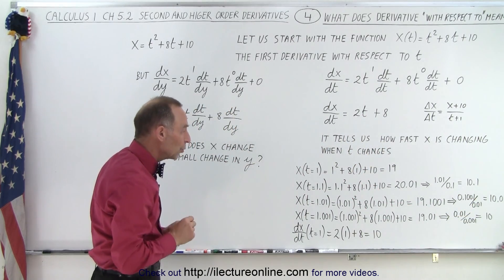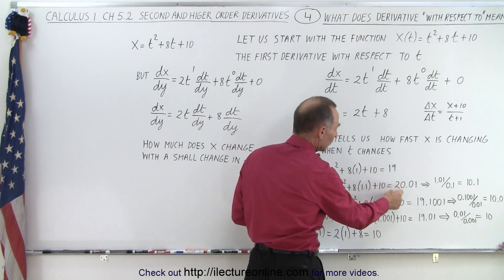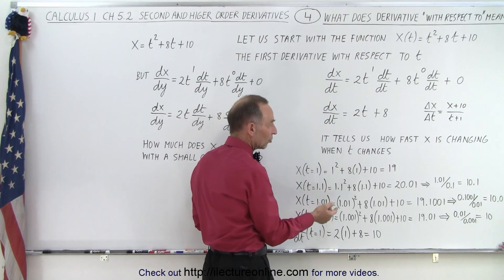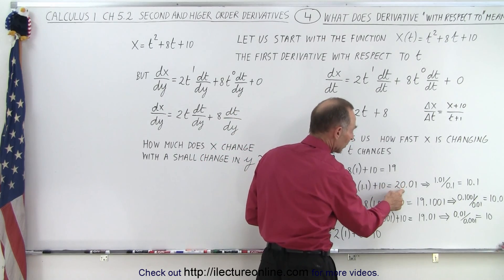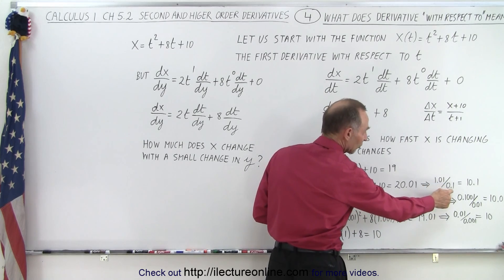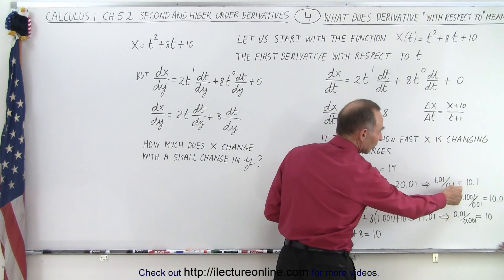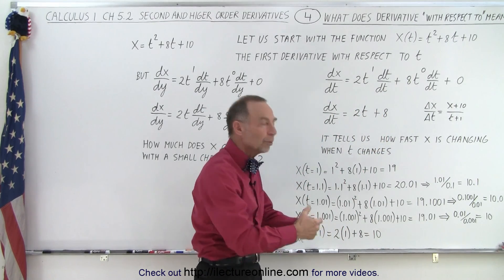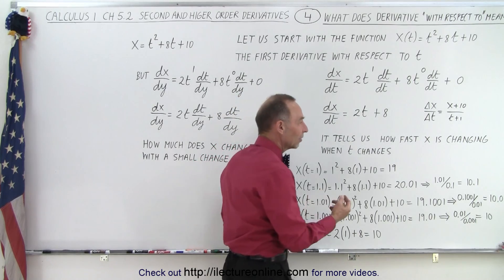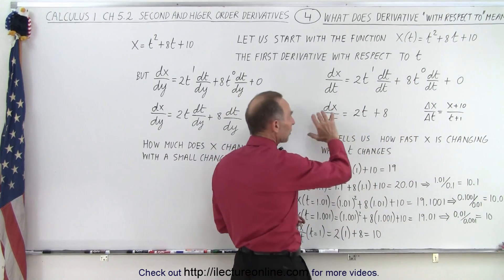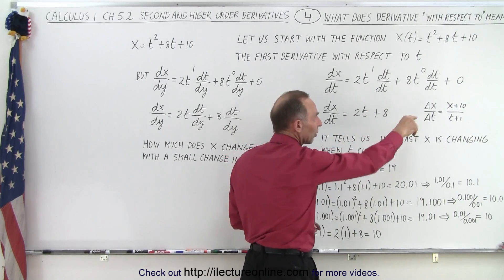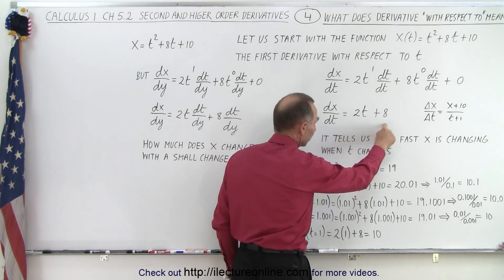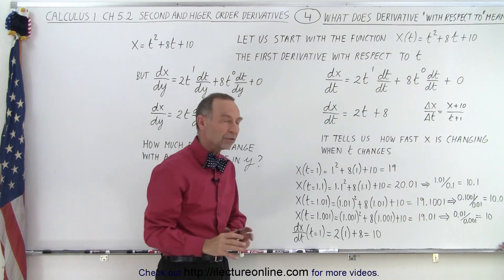Now let's take the difference between these values. We changed t by 0.1 and x changed from 19 to 20.01, so it changed by 1.01. The ratio 1.01 divided by 0.1 gives us 10.1 — that's essentially the value of the derivative, the change in x with respect to time. When we did the algebraic calculation we saw a 10 to 1 ratio; here we're using an algebraic approximation.